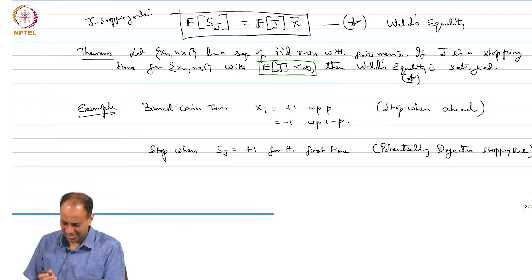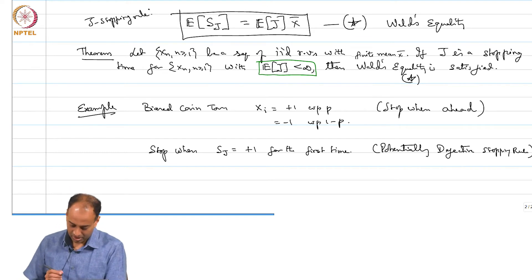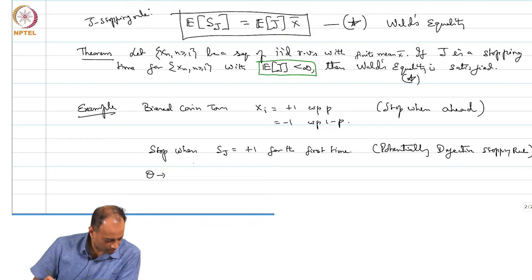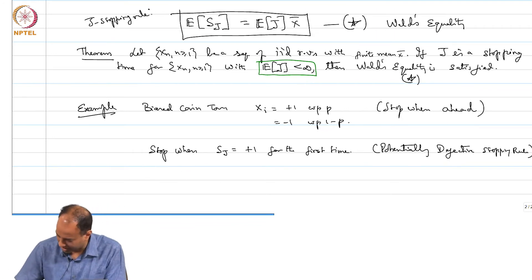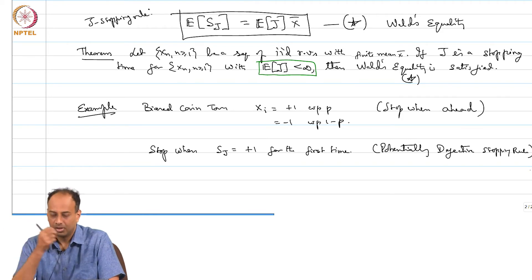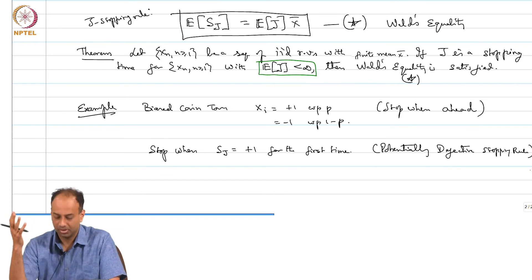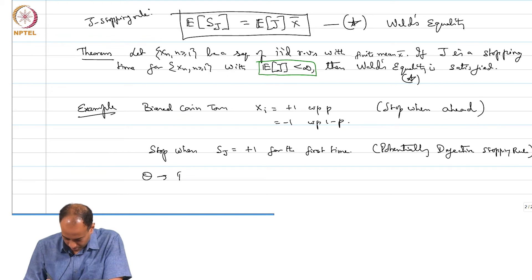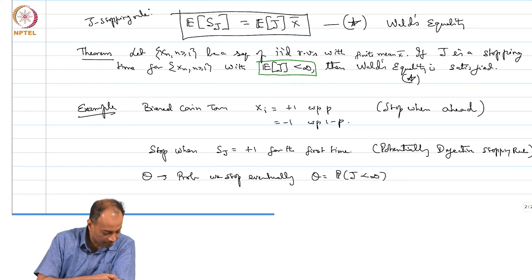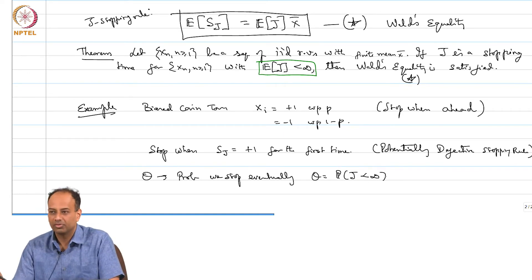You can analyze this using a Markov chain, but since we have not done Markov chains, we will use a recursive trick. Let theta be the probability that we stop eventually. If theta equals 1, it is a legitimate stopping rule; if theta is less than 1, it is a defective stopping rule.